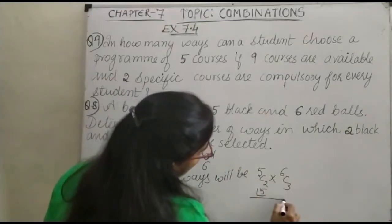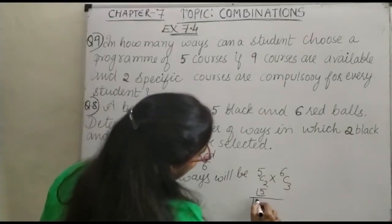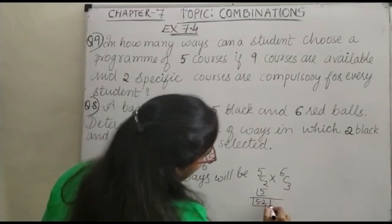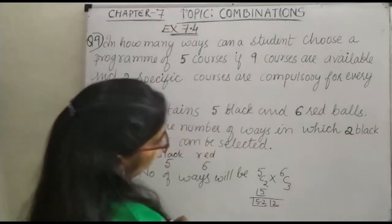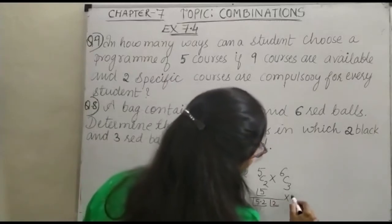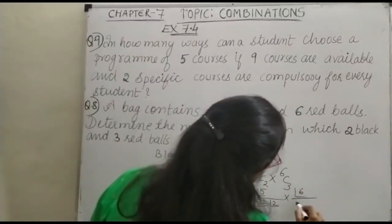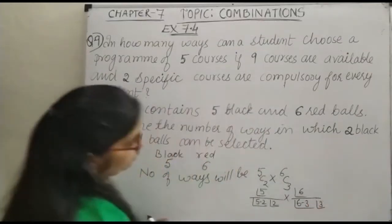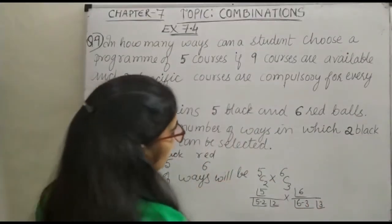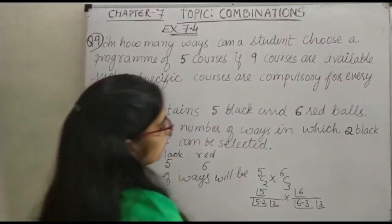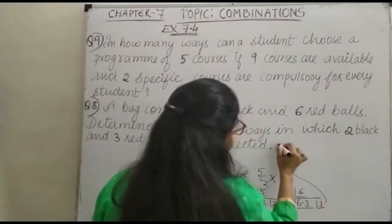This is factorial 5 upon 5 minus 2 and 2 factorial into 6 factorial, 6 minus 3 and again 3 factorial. As you know you can do this in shortcut method also. How will it be?